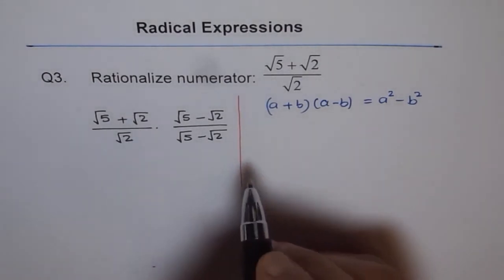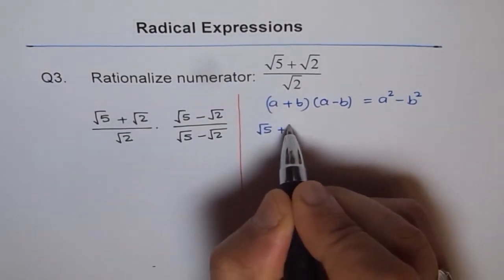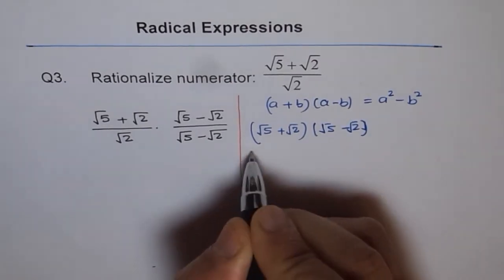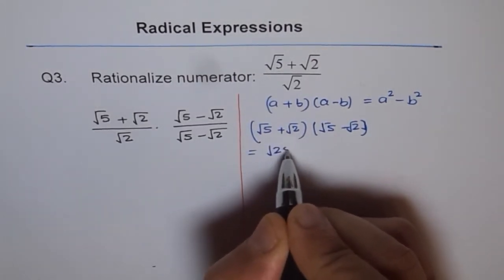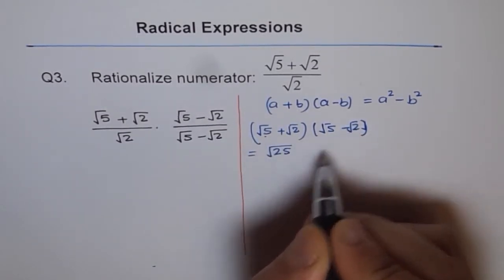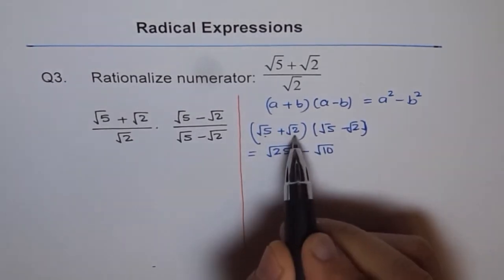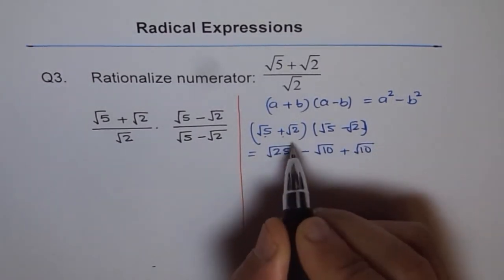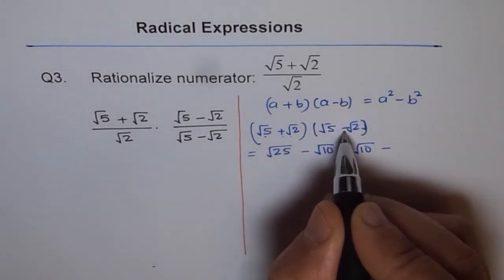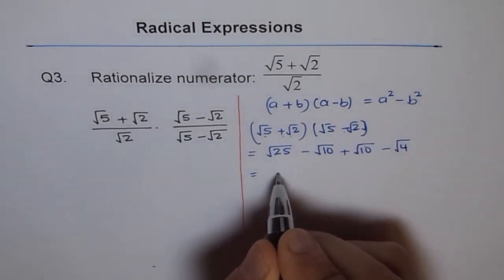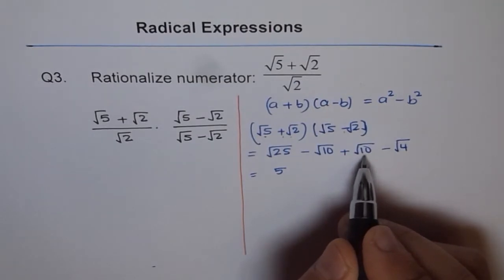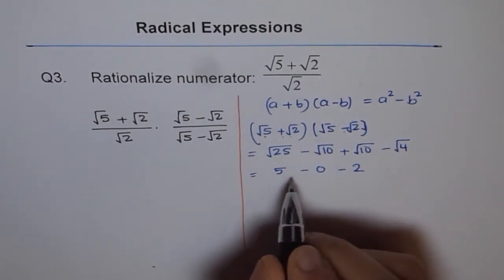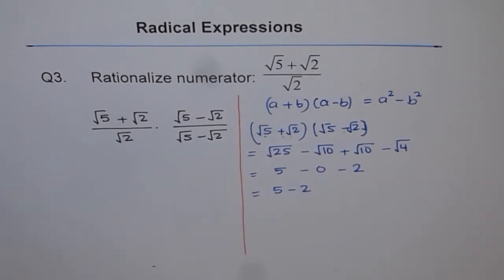Let us do it with radicals and see what we get. We have square root 5 plus square root 2, times square root 5 minus square root 2. That equals square root 5 times square root 5, which is 5 — let me write that — then square root 5 times minus square root 2 gives minus square root of 10. By the distributive property, square root 2 times square root 5 gives plus square root of 10, and square root 2 times minus square root 2 gives minus square root of 4. Square root of 25 is 5; minus square root 10 plus square root 10 is 0; and minus square root of 4 is minus 2. So we get 5 minus 2.